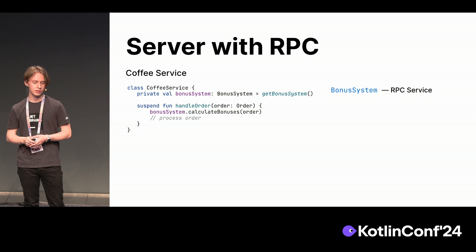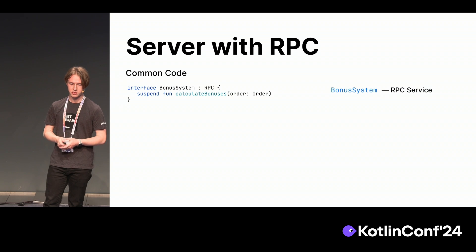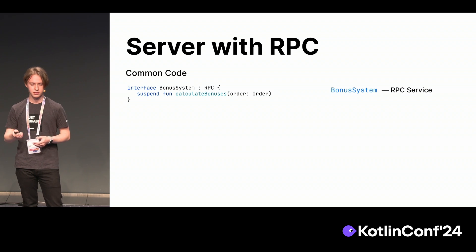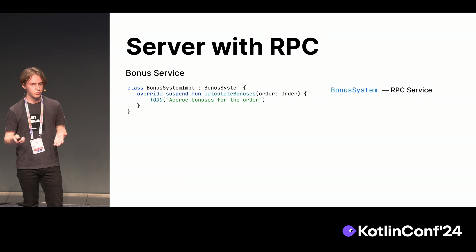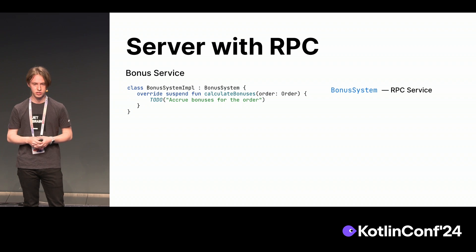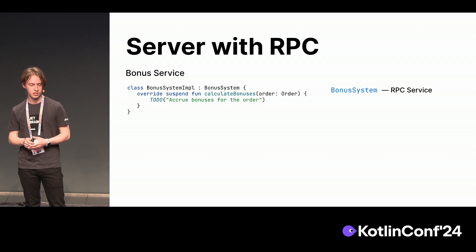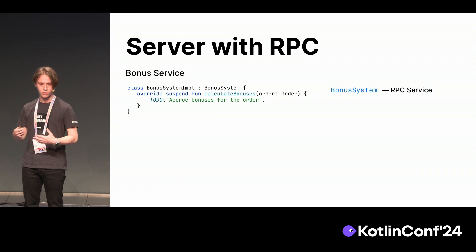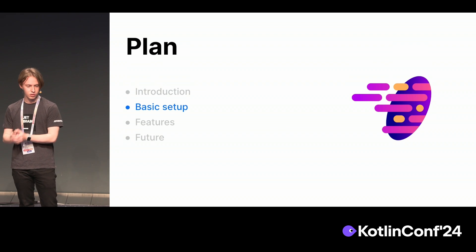We don't know anything about how it's all connected in terms of services, but it's still easy to write and easy to read, and we want to preserve this easiness and conciseness. We can call the bonus system our RPC service. We want to define it in the common code because we use Multiplatform. We can define our RPC service in the common code, mark it with an RPC interface, and define the functions we want to use. On the bonus service, we just implement this interface.